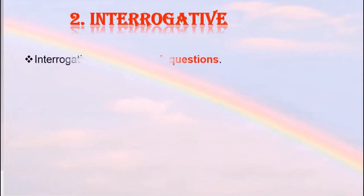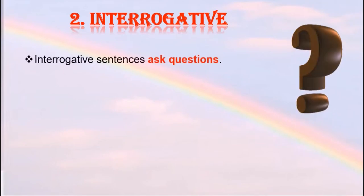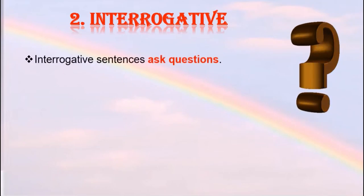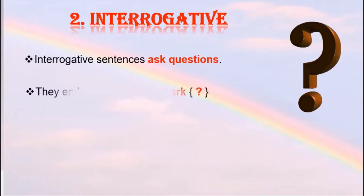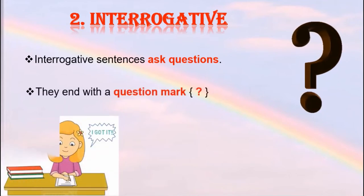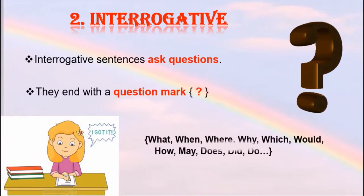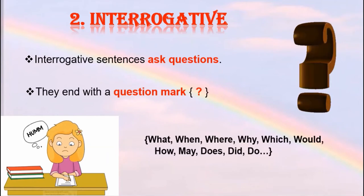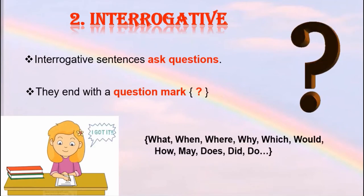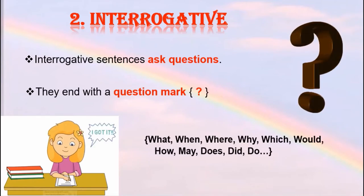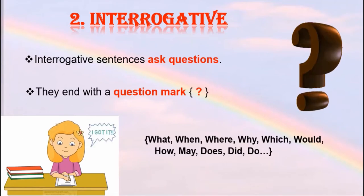Let us learn the next type of sentence: interrogative. Interrogative sentences ask questions. They end with a question mark. Most interrogative sentences begin with the letter W, such as what, when, where, why, which, would.